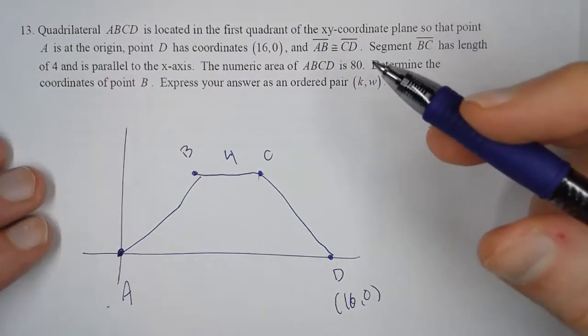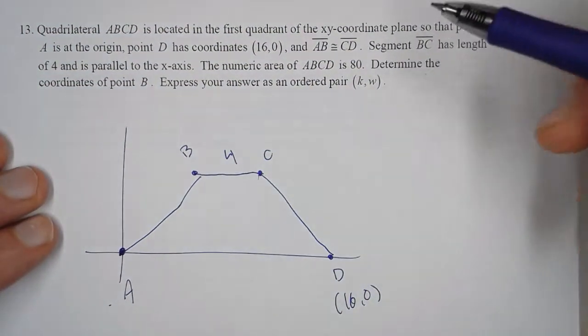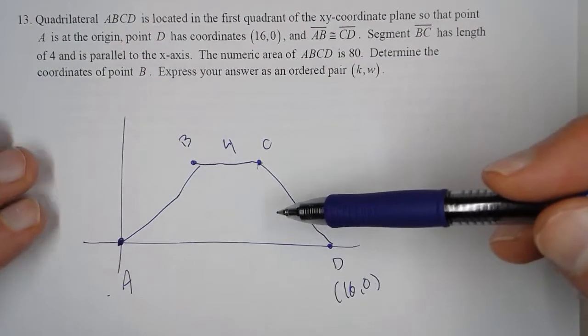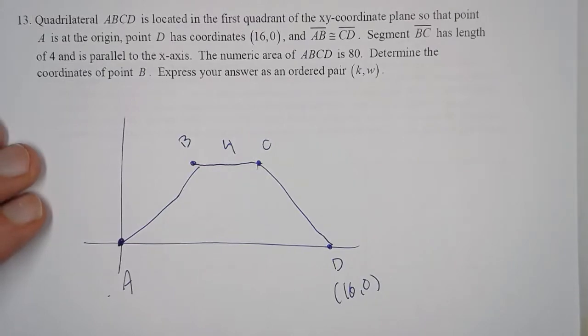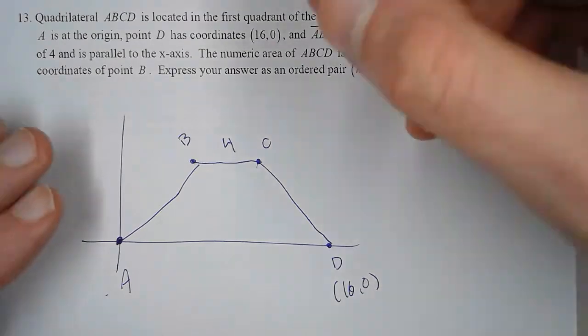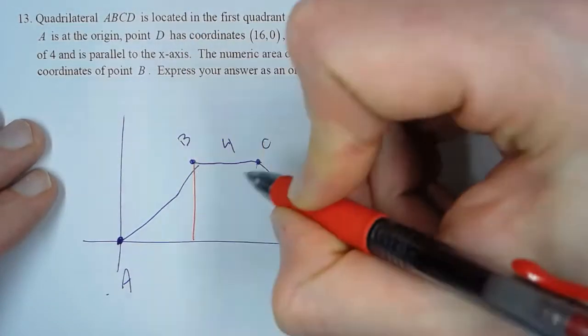All right, now we know that this area equals 80. Let's break this up, because even though this is a trapezoid, many people don't remember that formula, and that's okay, you don't need to.